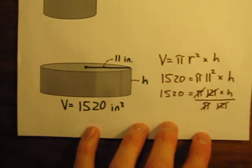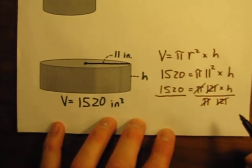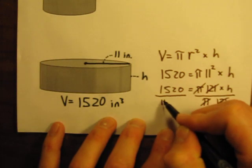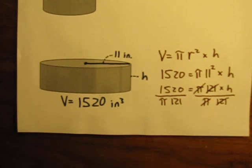But remember, this is an equation. If we're going to do something to one side, we need to do the same thing to the other side. So we need to divide this side by pi and divide this side by 121. And we should get our answer.